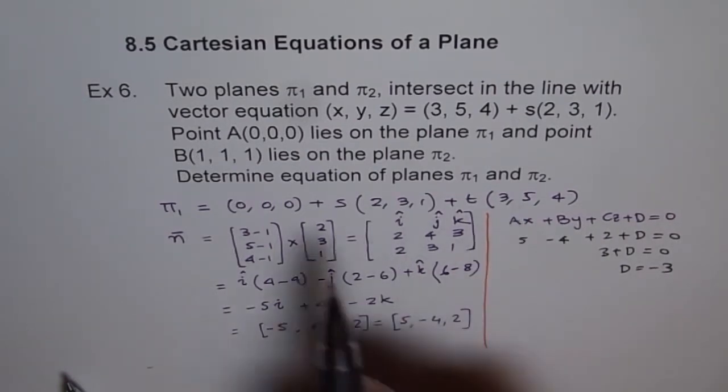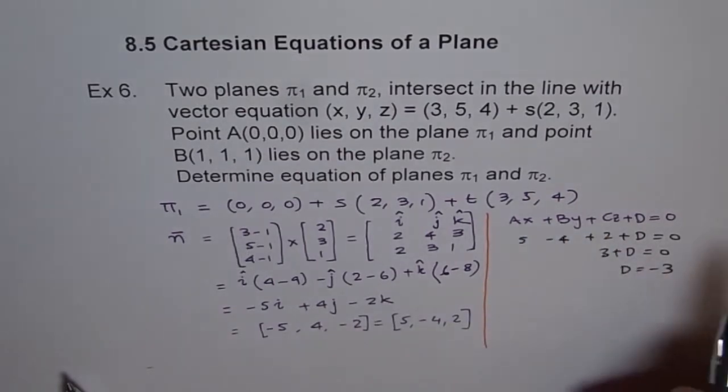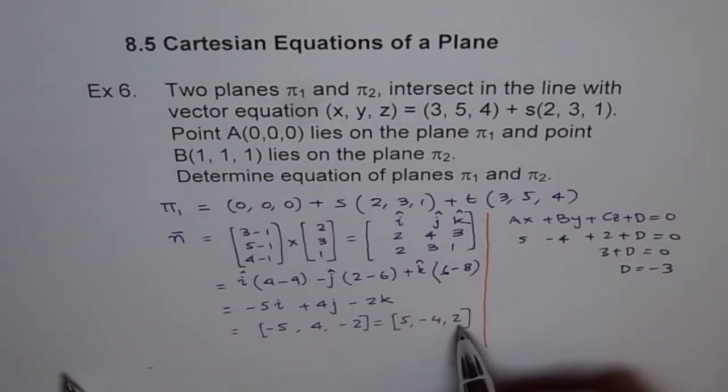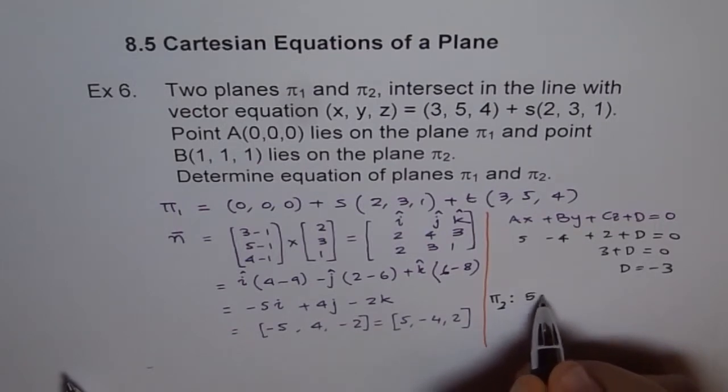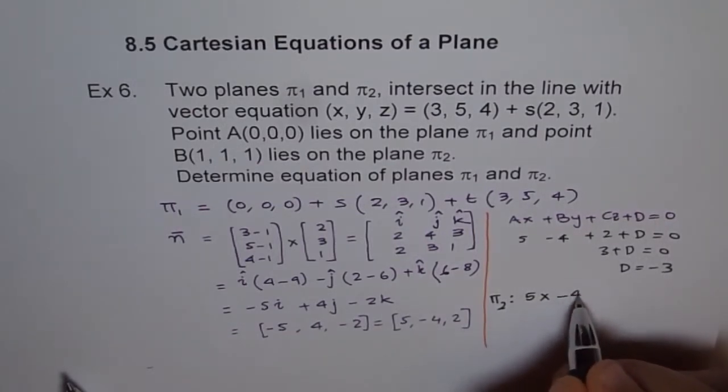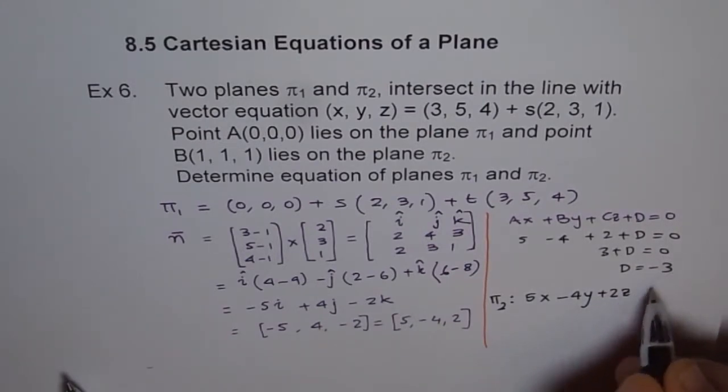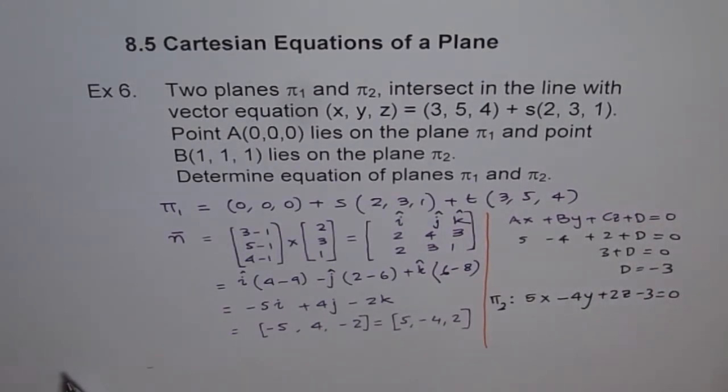Therefore, the equation π₂ will be 5x - 4y + 2z - 3 equals 0. That is the equation of our second plane. I deliberately chose two different methods to show you how you could write equation of a plane in this situation. Remember, when we are talking about intersection is a line, that means line is common to both planes. I hope you like it. Let's move on to the next example. Thank you.